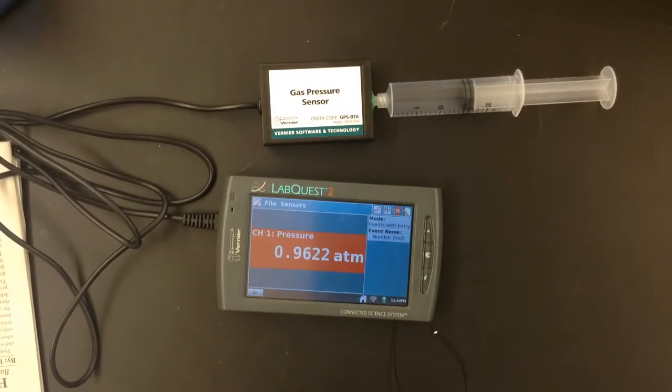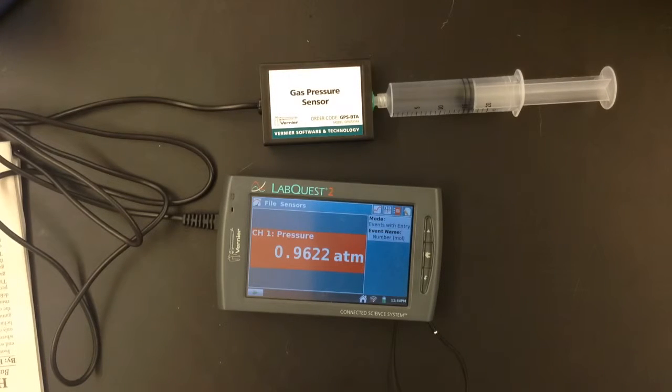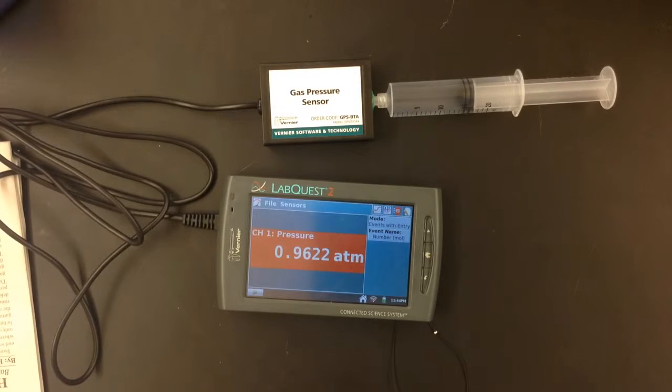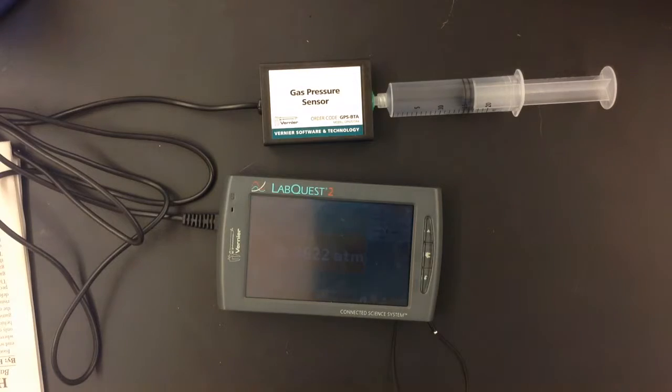Now for this lab, since we can't actually count the number of gas particles, we're going to say that for every one milliliter of gas we push into the pressure sensor, we are pushing in one mole of gas particles. That's an assumption we're going to make for this lab, really just to simplify things. So for every one milliliter I push my syringe in, I'm adding one mole of gas.